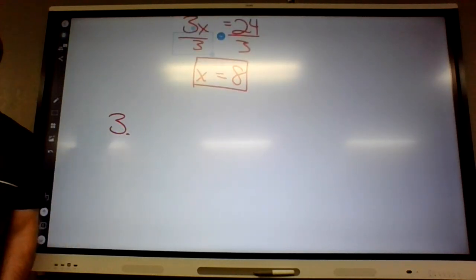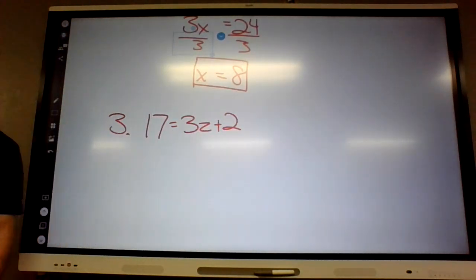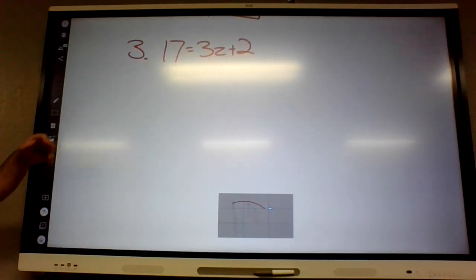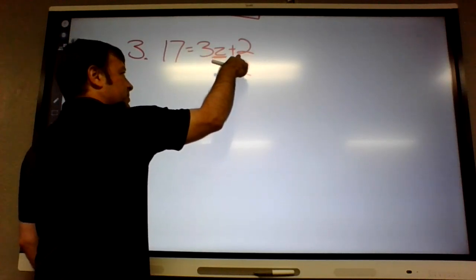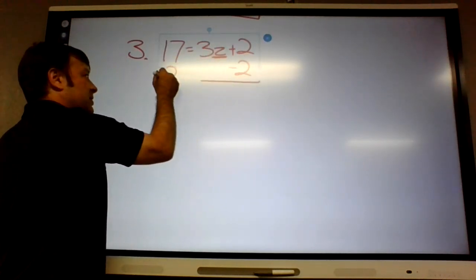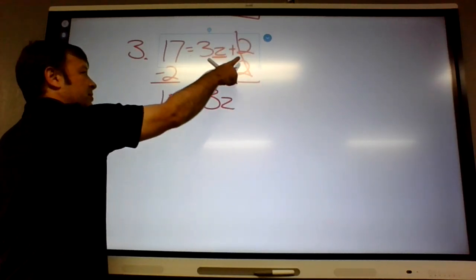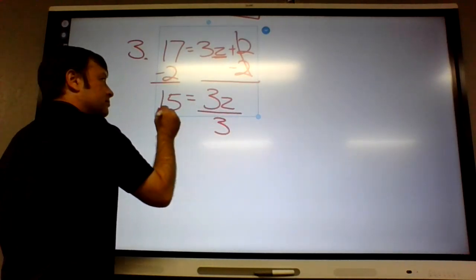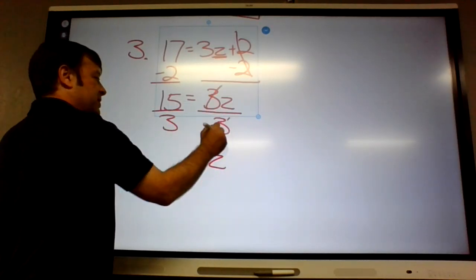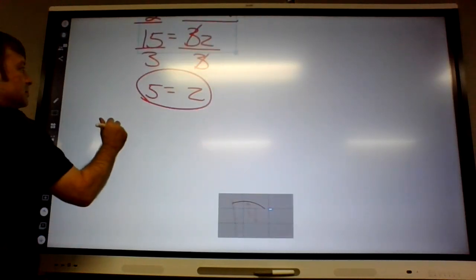Number 3: 17 equals 3z plus 2. Kenzie, what do we do? Minus 2. So we're trying to get z by itself. You've got to get rid of a plus 2 and then a times 3. So the plus or minus we're taking care of first. So that goes away, 3z equals 15. Now what? Divide by 3. So z is 5.